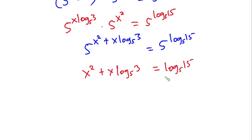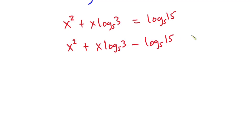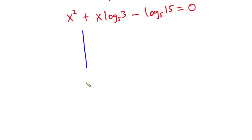Now let's move everything to one side and equate to zero: x squared plus x·log base 5 of 3 minus log base 5 of 15 equals 0. We now have a quadratic equation. You can use the quadratic formula to solve this — please go ahead and try it and let me know your answer in the comments. But I'm going to use the tic-tac-toe box method instead.